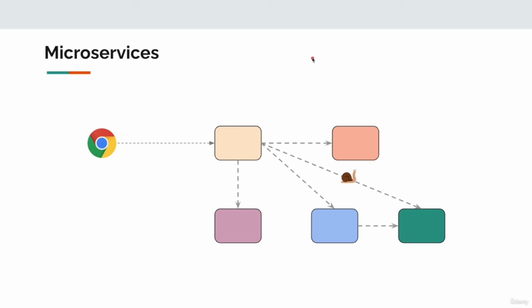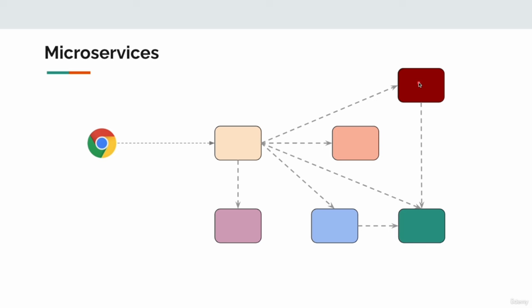Not only that — in the future, the business may ask us to add a recommendation service in the order workflow, requiring us to call yet another service. Now the order service has to worry about another service and another request-response data structure. It's not really flexible in this way.